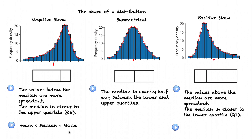We can also see skew by considering the relationship between the averages — the mean, the median and the mode. I always like to state these in alphabetical order: mean, median and mode. I notice that if the mean is less than the median, then I have a negative skew. And I notice that it's as if the inequality sign is pointing to the negative direction, which helps me remember what this means.